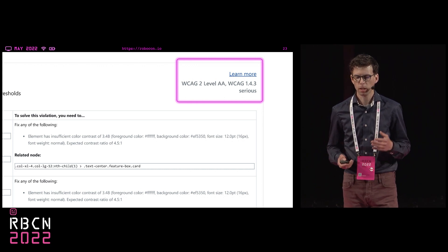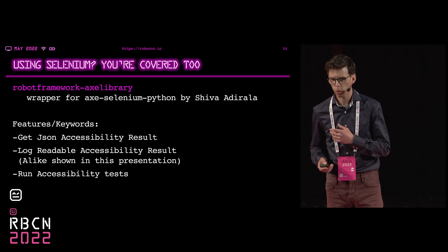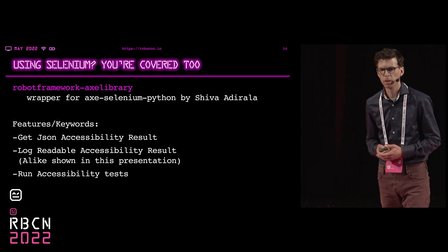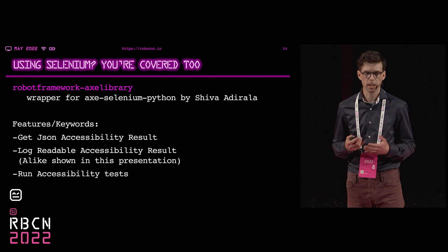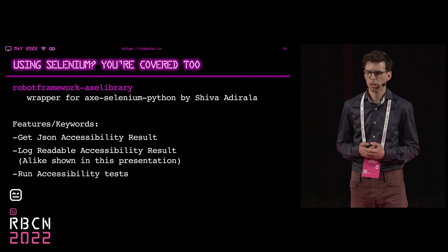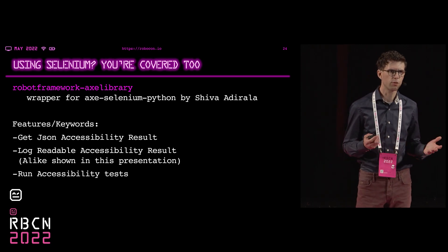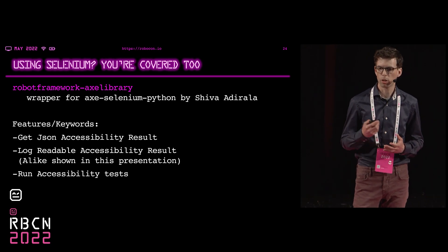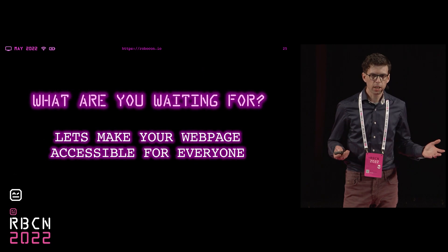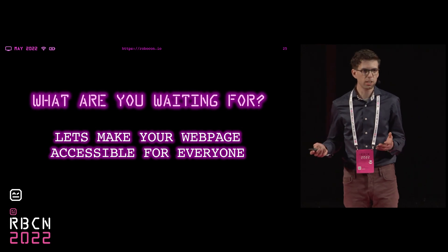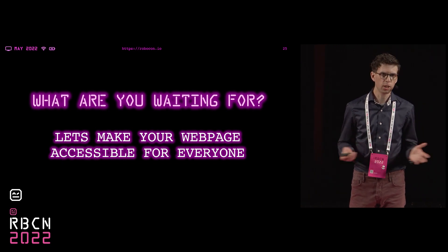Now you may say: I'm not using Browser Library, I'm using Selenium Library. Well, we've got you covered too. There is also a robotframework-axe library made by Shiva. He has made basically the same implementation for Selenium as I just showed you — it also gives you the ability to run Axe rules and log the results into your Robot Framework logging. So really, what are you waiting for? It's this easy to start checking web accessibility for your web automation.